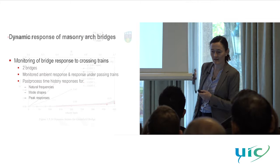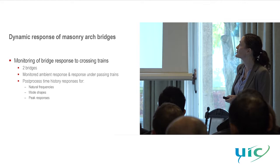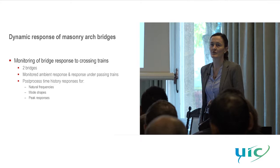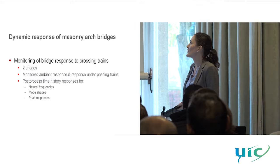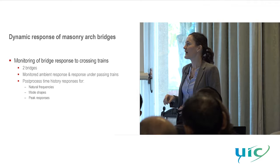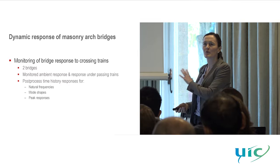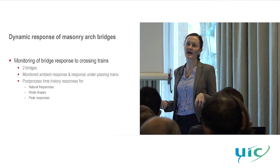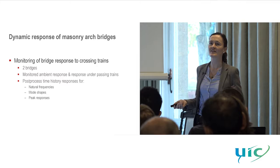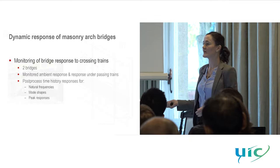We then went out into the field and monitored two bridges and their response to crossing trains, monitoring both ambient response and live load response, then post-processed the time histories to look at the natural frequencies, mode shapes, and peak responses. The aim was to get dynamic characteristics to validate our models and explore a much broader range of speeds than we could capture on site with existing trains.